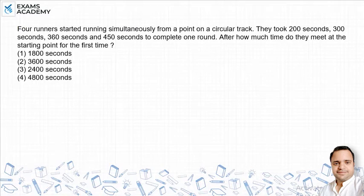Four runners start running simultaneously from a point on a circular track. They took 200 seconds, 300 seconds, 360 seconds and 450 seconds to complete one round.